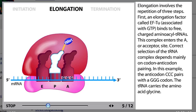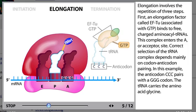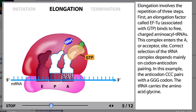Elongation involves the repetition of three steps. First, an elongation factor called EF-Tu, associated with GTP, binds to free charged aminoacyl-tRNAs. This complex enters the A, or acceptor, site. Correct selection of the tRNA complex depends mainly on codon-anticodon pairing. In this example, the anticodon CCC pairs with a GGG codon. The tRNA carries the amino acid glycine.